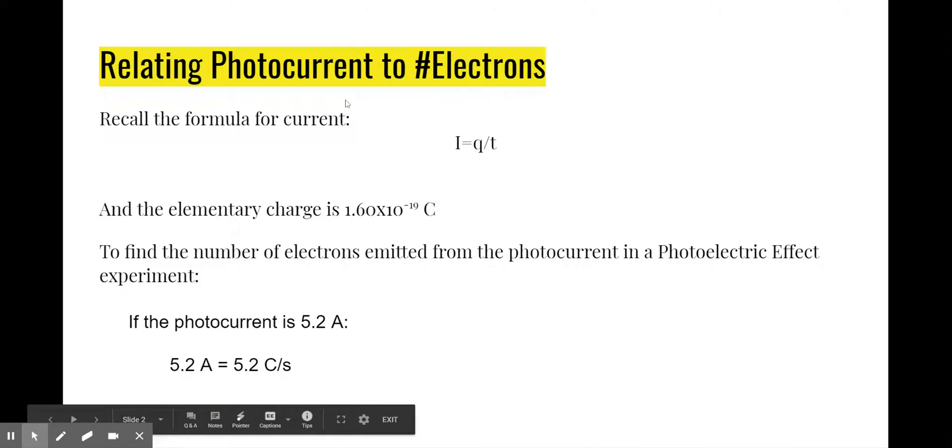For example, often we're expected to relate photocurrent to the number of electrons. Let's take a look at how we can do that. The formula for current says that I is equal to Q divided by T. You usually write it like that, but word formatting looks like that. So I is Q over T.